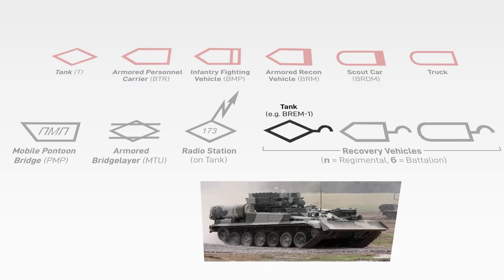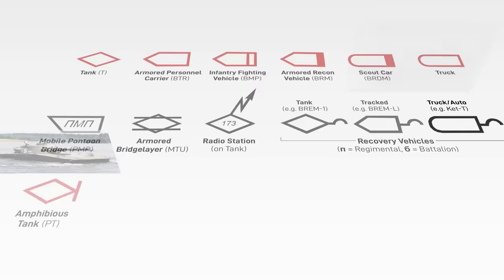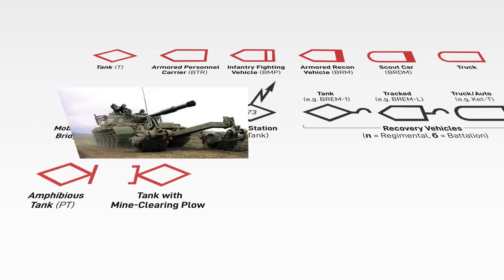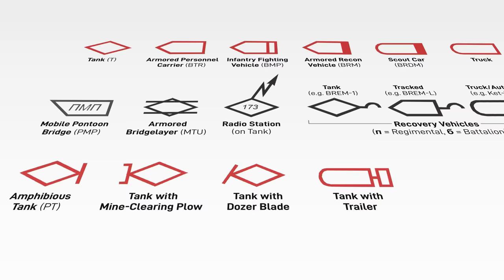The diamond normally depicts a heavy recovery vehicle like a BRM-1. A pentagon is a track vehicle like a BRM-L. And a rounded rectangle is truck-based. A straight line at the base means the tank is amphibious. A bracket at the front means it's equipped with a mine-clearing plow. And a slanted line at the front means it has a bulldozer blade. A little square attached to the rear means the vehicle is towing a trailer. And a cross, of course, means it's an ambulance.